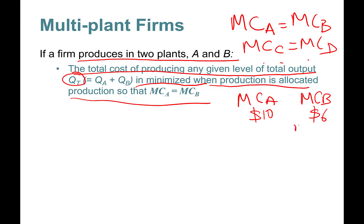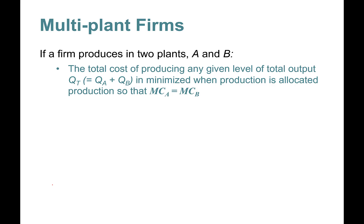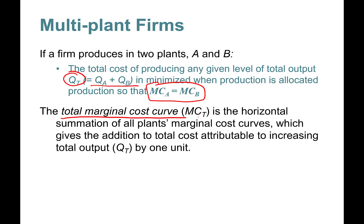That's basically the idea - you need to allocate total quantity across different factories such that marginal cost across different plants are equal to each other. The total marginal cost curve is the horizontal summation of all plants' marginal cost curves, which gives the addition to total cost attributable to increasing total output by one unit.